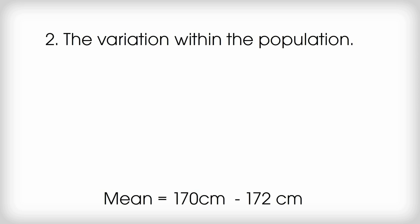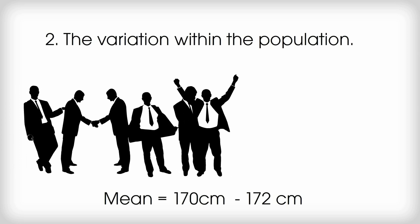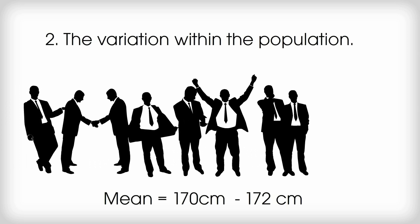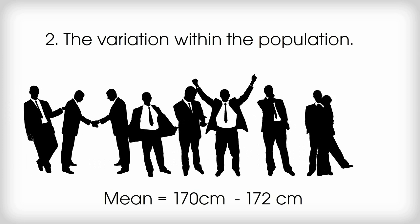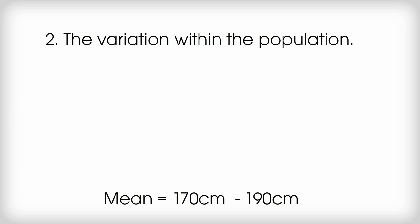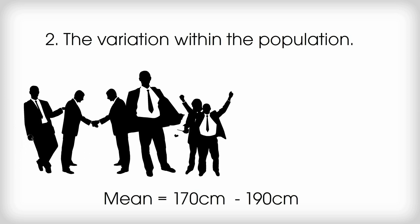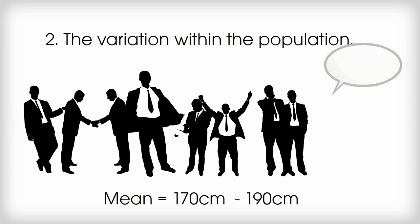The variation within the population is the second thing. If all males within the population are almost the same height, we can say there's little variation within the population, so any sample will be fairly similar to any other sample. There will be a narrow, small confidence interval. On the other hand, evidence that there's a relatively big variation in heights across the population will result in a more varied sample. As a result, our confidence interval will be wider, larger.